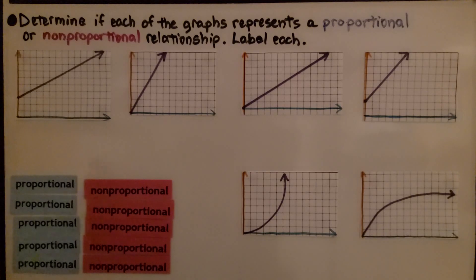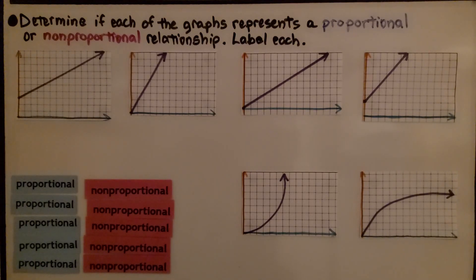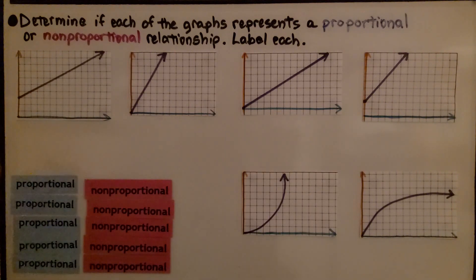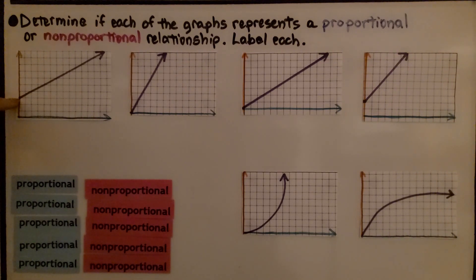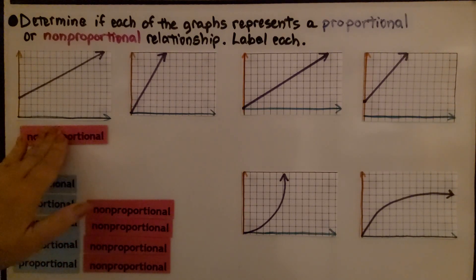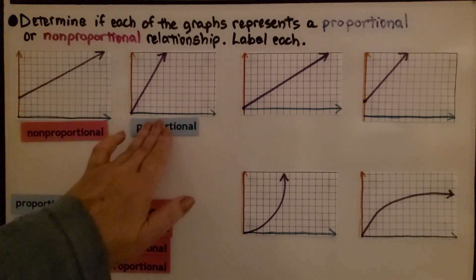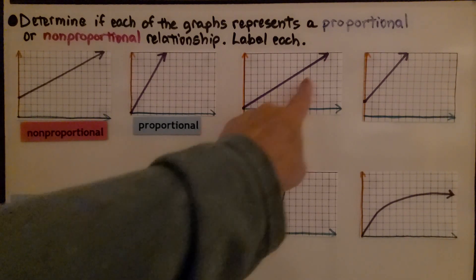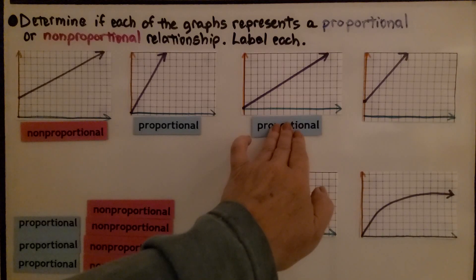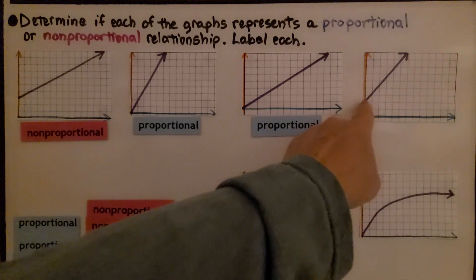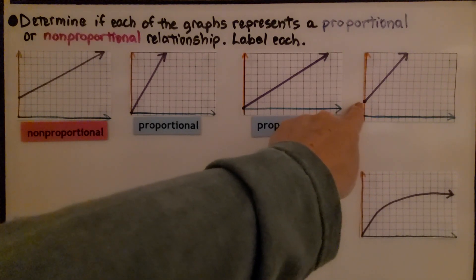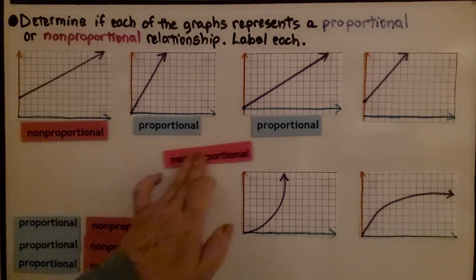Here we have six graphs, and we need to determine if each represents a proportional or non-proportional relationship. Starting with the first one: it is linear, but the line is intercepting the y-axis up here at three, so it's not going through the origin — that means it's non-proportional. The next one is going through the origin and it's a straight line, so that one is proportional. This one is going through the origin at zero zero and is a straight line — proportional. This one is going through the y-axis at two, meaning the y-intercept b is two, not going through the origin — non-proportional.